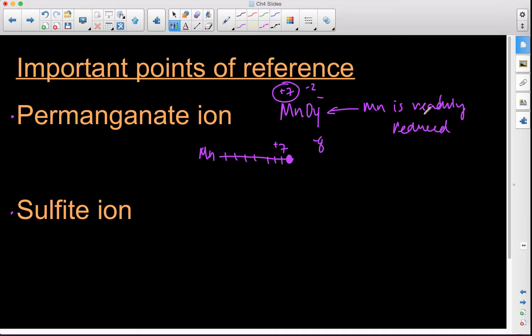If manganese is going to be reduced, which basically means gaining electrons, like reduction is a gain in electrons, then somebody else has to be giving those electrons away and itself being oxidized.